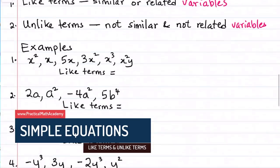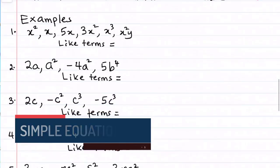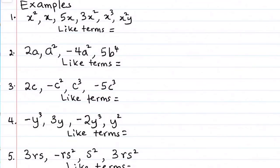We start with example number one. Looking at it, we have x squared, x, 5x, 3x squared, x cubed, x squared y.